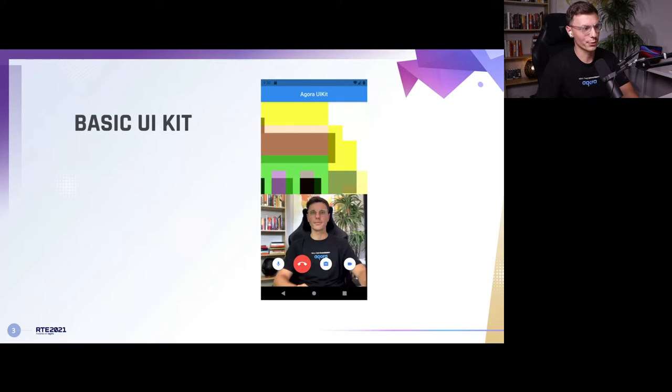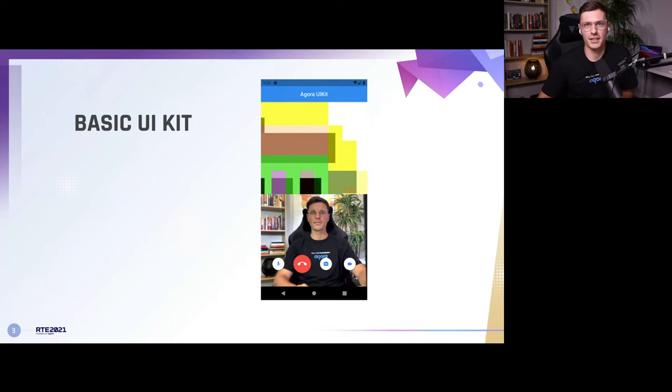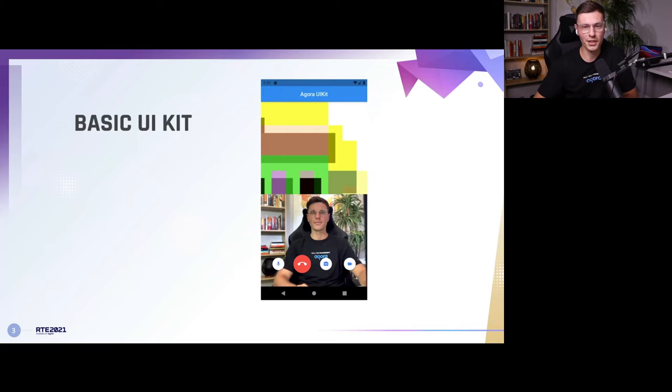Let's get into the actual UI kit. This is what we're going to build. The UI kit makes it really simple to put video calls into your application. You can create something like this with only three lines of code. I have a video prepared to show off those three lines of code — from creating the Flutter project all the way to pushing it out and making it work.